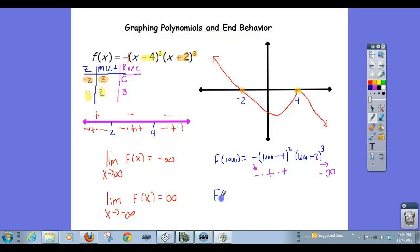And again, the same reasoning if we plug in negative 1,000. We get negative, negative 1,000 minus 4 squared times negative 1,000 plus 2 cubed. And this negative will always be there, so I'm just going to write it down. A negative 1,000 minus a 4 is a negative 1,004. And when you square that, it becomes a big positive number because it's a negative times a negative. And a negative 1,000 plus 2 is a negative number, a big negative number. And when you cube that, it becomes even bigger in absolute value, but it's going to be negative because you have a negative times a negative times a negative, so it's a negative. A negative times a positive times a negative is a positive, and that's why as x goes to negative infinity, the y values go to infinity.